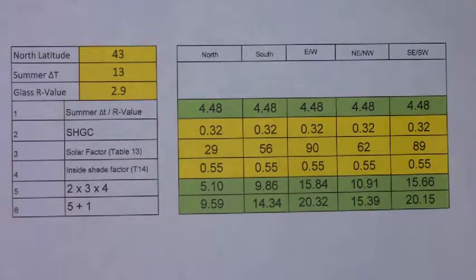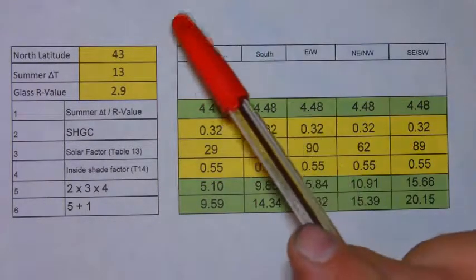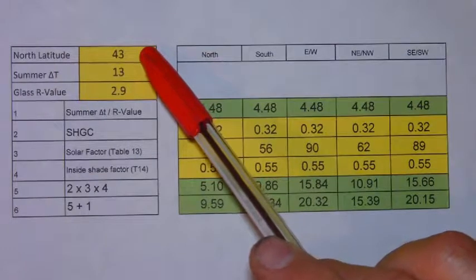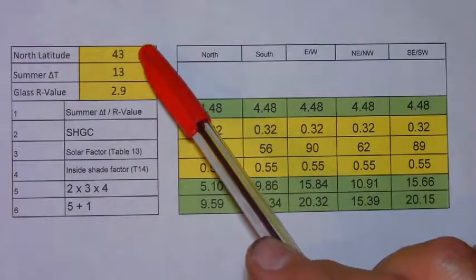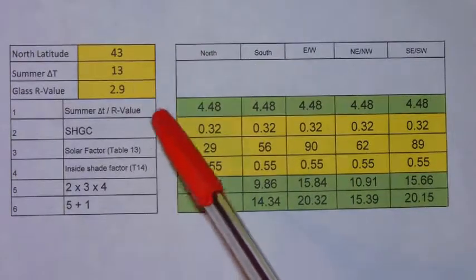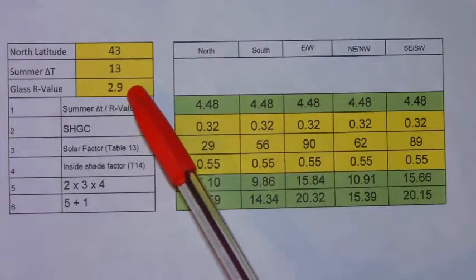Towards the back of the worksheet you will see this table. You will need to know the north latitude of the city you are designing in, the summer delta T, and you will need to know your glass R value.